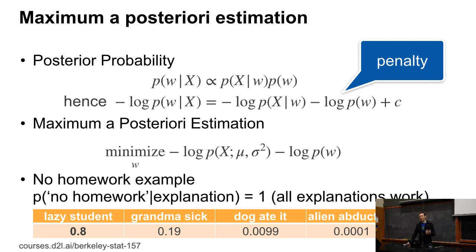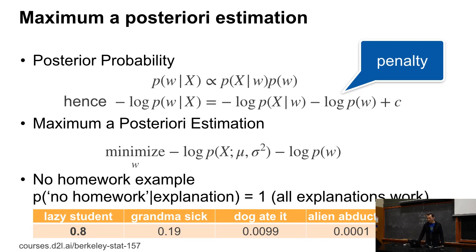What happens is you essentially add a penalty term over the parameters to your standard maximum likelihood problem. Sometimes people call this penalized maximum likelihood — what they're doing is maximum a posteriori (MAP). Regularized maxent does the same thing. People have invented the same algorithms under many different names. In the homework example, while all options have the same log-likelihood, the prior is vastly different, so the TA will infer you were probably too lazy.